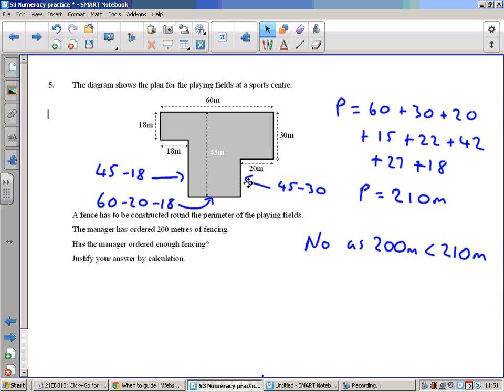The diagram shows the plan for the playing fields at a sports center. The manager has ordered 200 meters of fencing. Will that be enough? There's some missing sides. This side, I know this side here is 30, the total height is 45, so this side will be 45 minus 30 which would be 15. This side, again still height of 45, this part's 18, so this side must be 45 subtract 18. This length here, that's 60, 18 plus this length plus 20 must come to 60, so this length on its own is 60 subtract 18 subtract 20, so obviously that's 22.